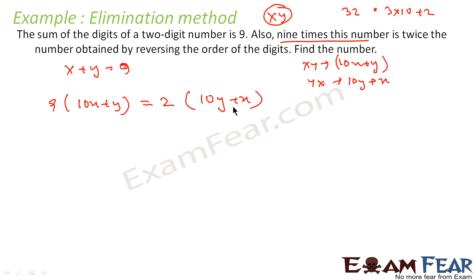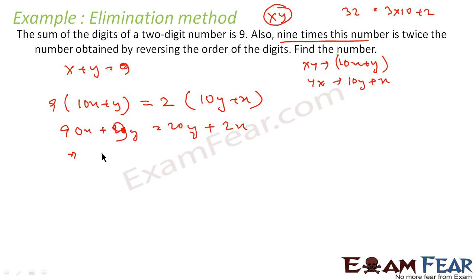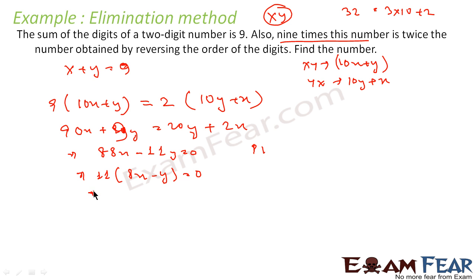Let me simplify this equation. 90x plus 9y equals 20y plus 2x, which gives 88x minus 11y equals 0. Taking 11 as common: 11 times (8x minus y) equals 0, or 8x minus y equals 0.